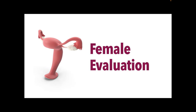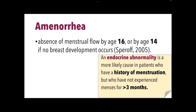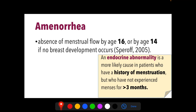For evaluation of female reproductive function, an abnormal menstrual cycle pattern is one of the best predictors of anovulation. Amenorrhea refers to the absence of menstrual flow by age 16, or by age 14 if no breast development occurs. In patients who have not exhibited menses by age 16, this is often due to genetic or anatomic abnormality, though an endocrine abnormality is still possible. The presence or absence of secondary sexual characteristics such as breast development is an important indicator. If a woman has a history of menstruation but has not experienced menses for over three months, an endocrine abnormality is suspected.